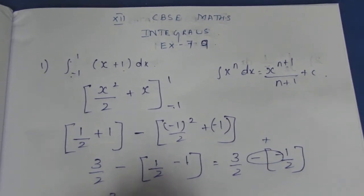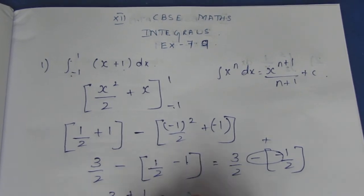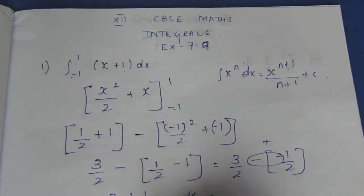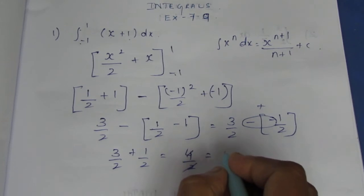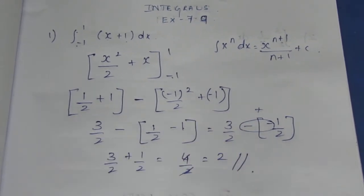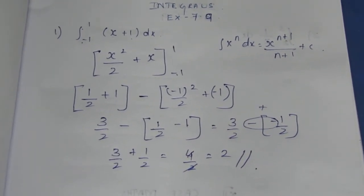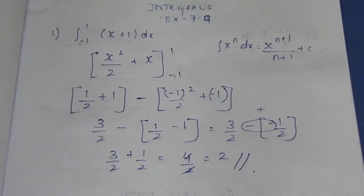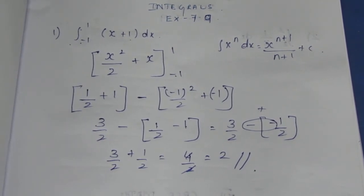So 3 by 2 plus 1 by 2 which is 4 by 2, solving it becomes 2. The final integration and substituting the values, the final answer is 2.